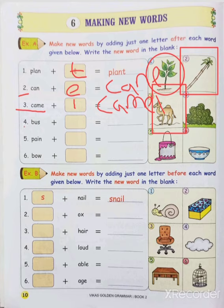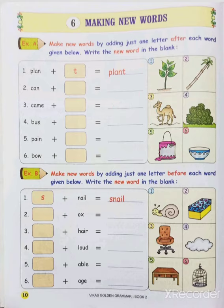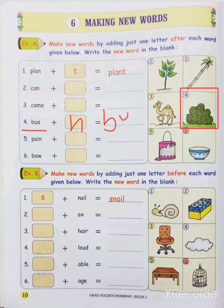What is the fourth one? Bus. And what is given in the fourth picture? Bush. Bush means like our grass. You can see it's B, U, S — bus. The picture given here is bush. What is the spelling of bush? B, U, S, H. So when we add H here, which new word do we get? B, U, S, H — bush.